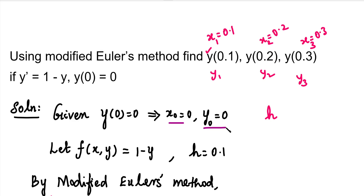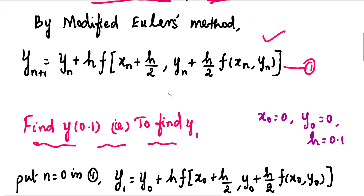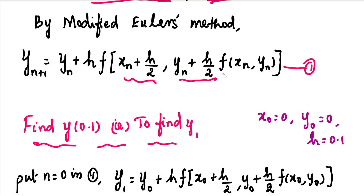In the first step, we assume x0 and y0 to find the value of y1. In the second step, we use x1 to find y2. In the third step, we use x1 and y1 values to find y2. There is a function involved in the computation.